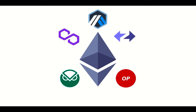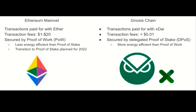While testnets provide a safe testing environment for developers to work in, side chains and roll-ups help scale the Ethereum ecosystem by providing networks with much cheaper transactions. The Gnosis chain, previously known as the XDAI chain, is a side chain of Ethereum.